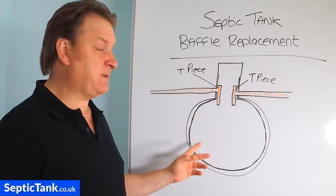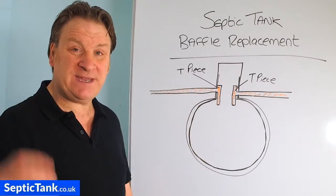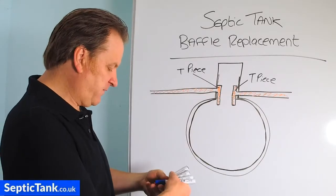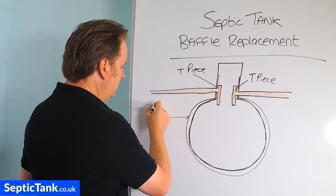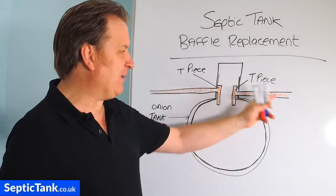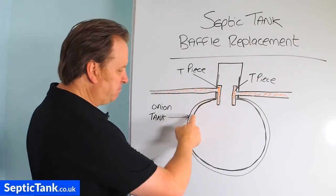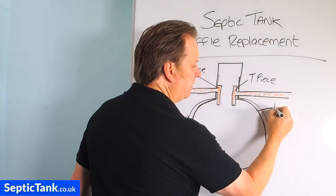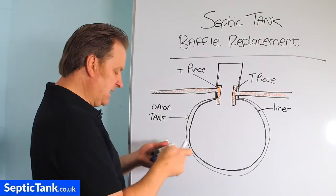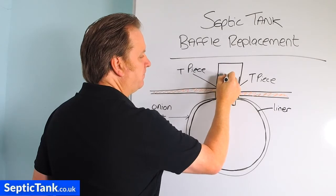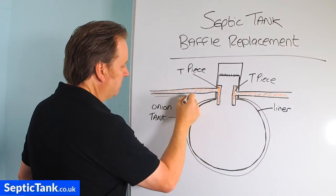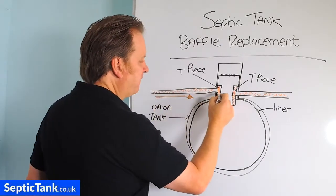This is a diagram of an onion-shaped septic tank. If I explain how it works and why you need a baffle, you'll have a better understanding. So inside an onion tank — this is the outside shell — you've got an inlet pipe, an outlet pipe, and some tee pieces. Inside you've got this black line I've drawn, which is called a liner — it's like a black rubber liner inside the tank, held into place inside the neck of the tank by hooks.